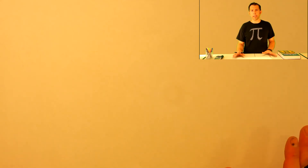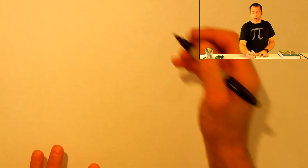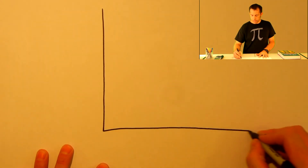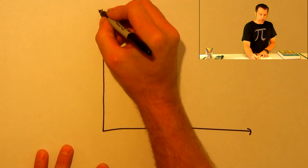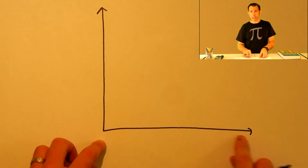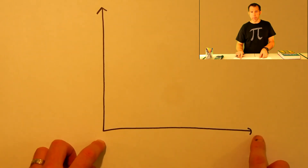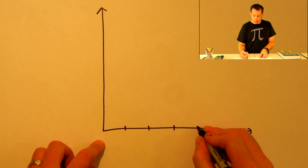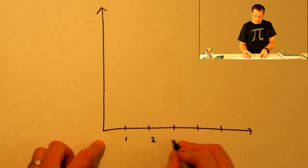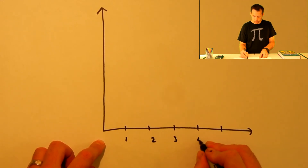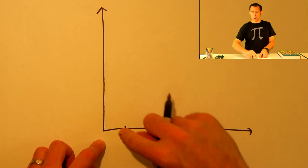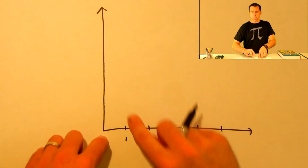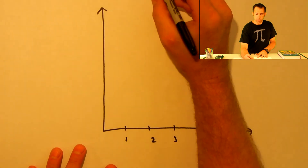Because a sequence is a function, it can also be graphed on a Cartesian coordinate plane. In this case, our x-axis represents the domain — that set of natural numbers 1, 2, 3, 4, 5, and so on. And our range, which is the y-axis, becomes the numbers in the sequence.